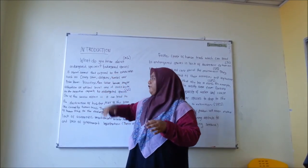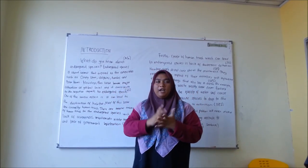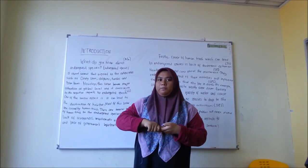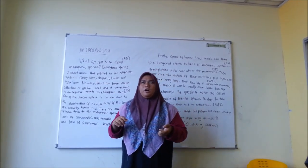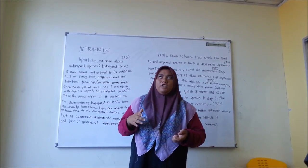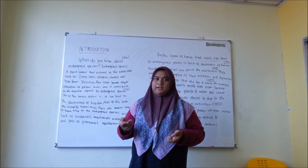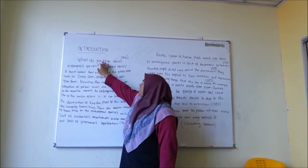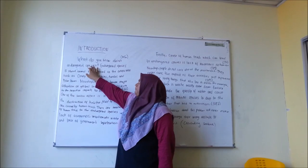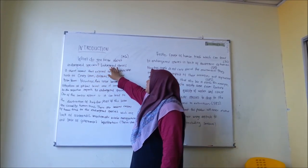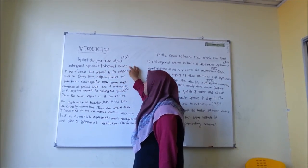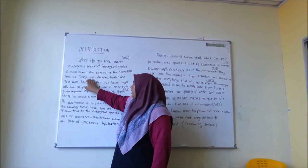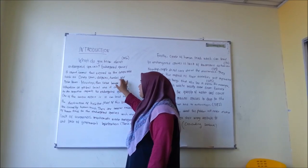In our introduction, we have written a question as the attention getter, and a definition on the topic about the effect of human threats to endangered species. Our attention getter is: what do you know about endangered species? And the definition is: endangered species are animals that are exposed to extinction, such as orangutan, dolphins, turtles, and polar bears.